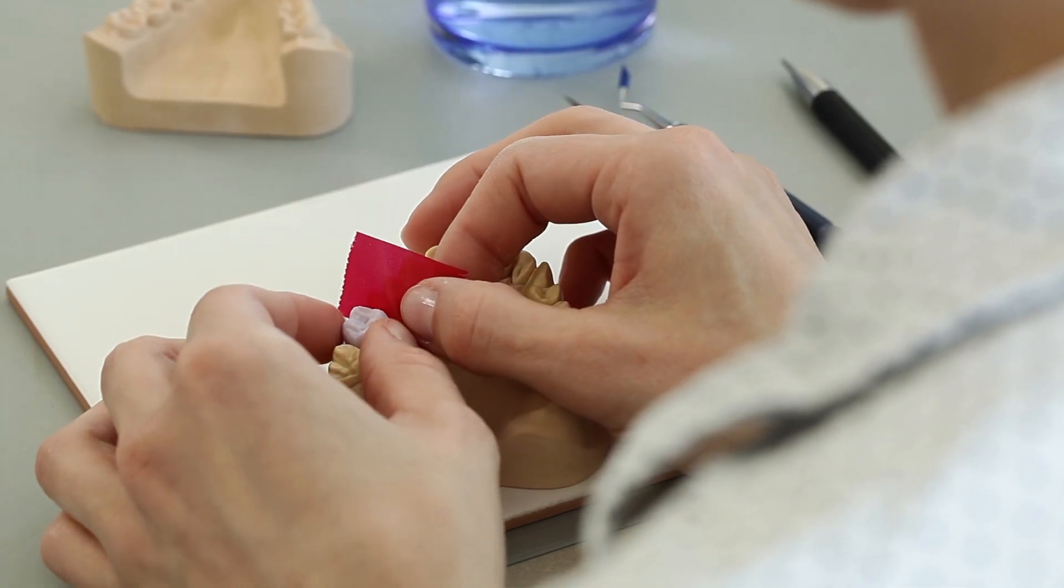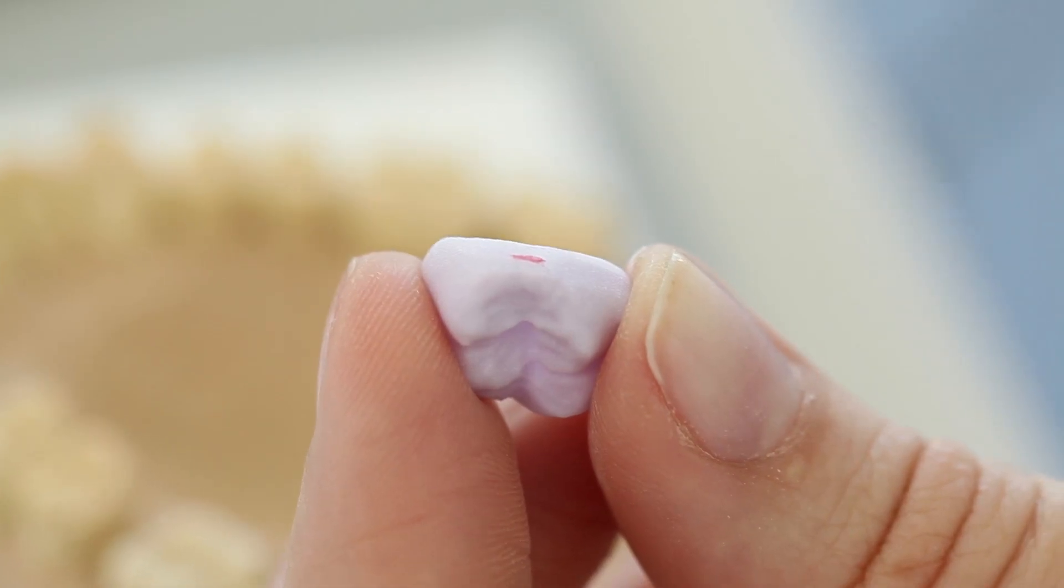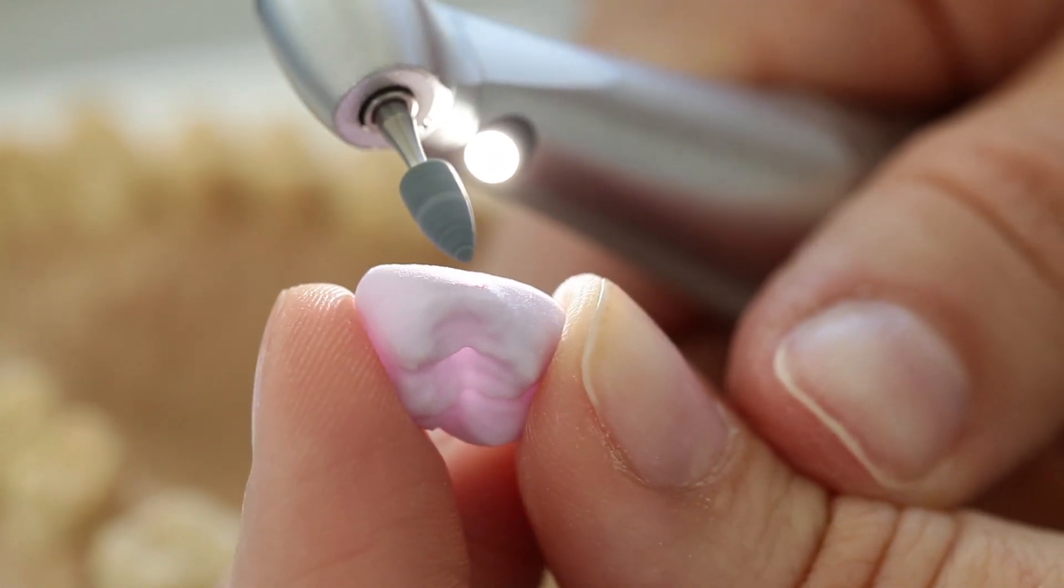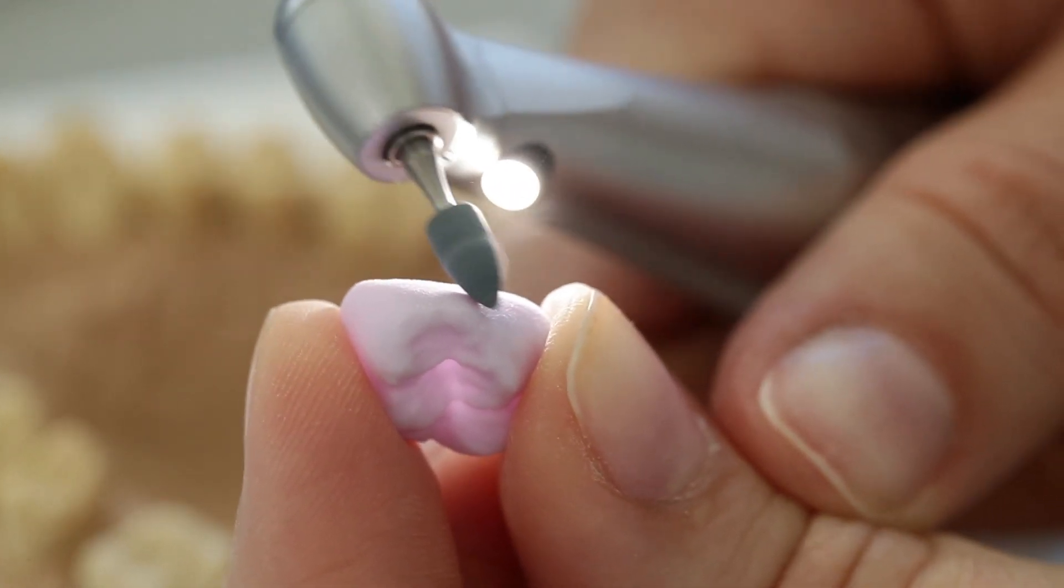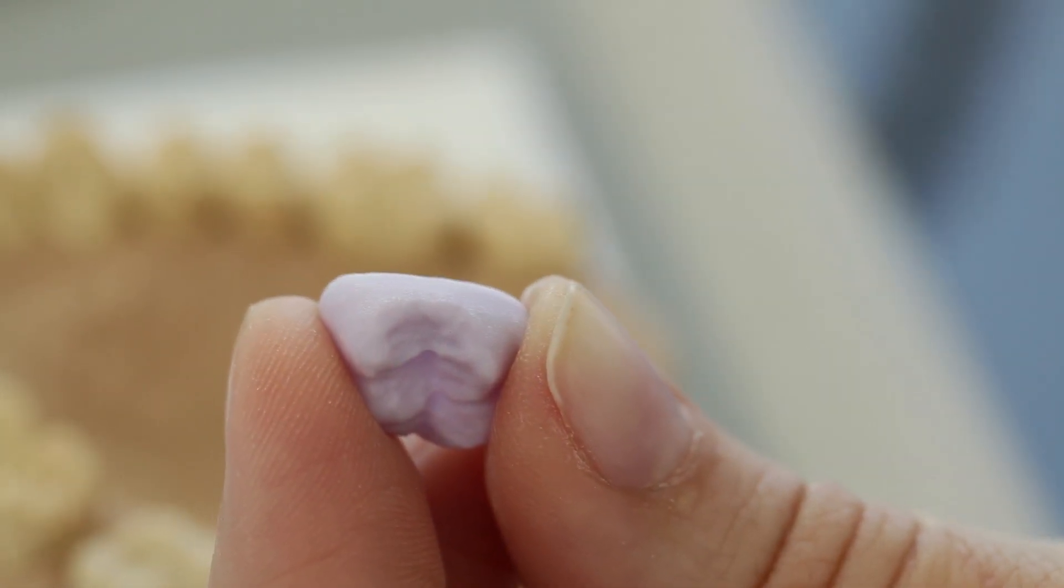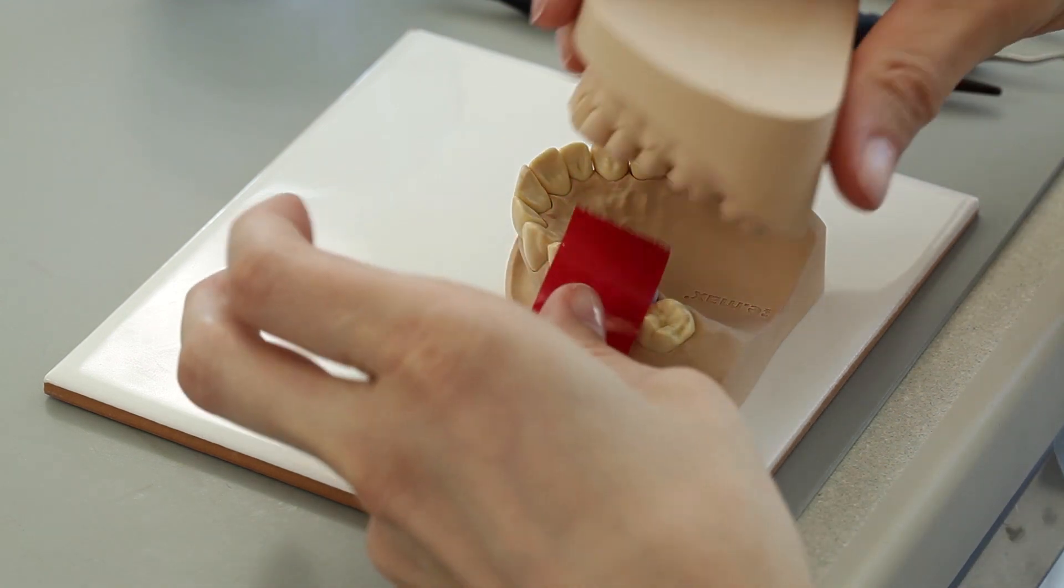Check the proximal contacts with articulating paper. If any adjustments of shape are required, these should be made in the pre-crystallized blue state. The restoration margins should also be adjusted if necessary. Check the occlusion and articulation and make any adjustments if needed.